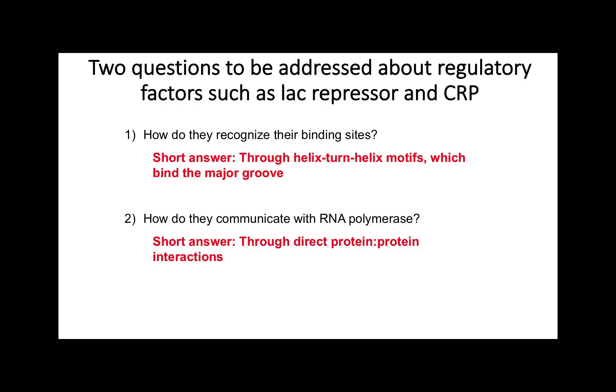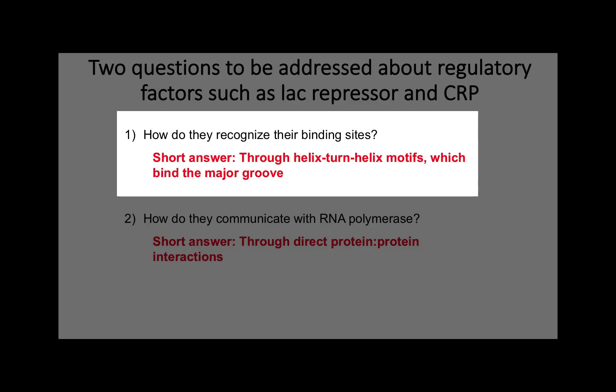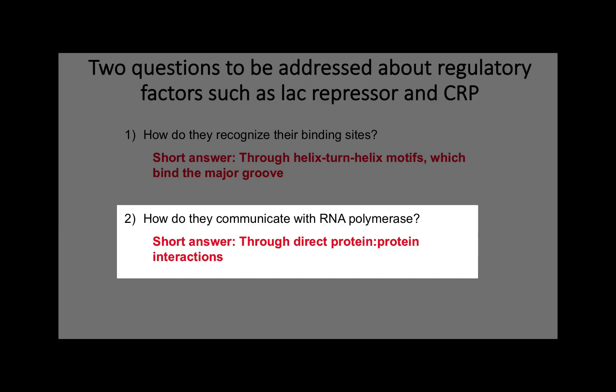Two questions can be asked about regulatory factors such as CRP. First, how do they recognize their binding sites? The short answer is that they use helix-turn-helix motifs, which bind the major groove. The second question — the main focus of this video — is how do regulatory factors such as CRP communicate with RNA polymerase? In other words, how do they send a message to RNA polymerase that it's time to transcribe the promoter? The short answer is that they do so through direct protein-protein interactions between the regulatory factor and RNA polymerase.